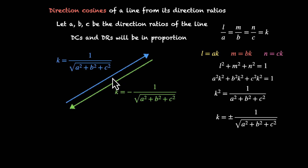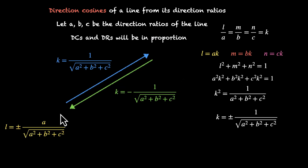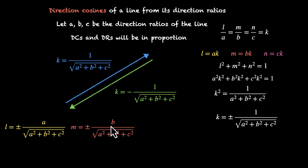If we're heading one way, we get one set of L, M and N — one set of cosines. If we're heading the opposite way, we get the negatives of them. Plugging in the values, L = ±A/√(A² + B² + C²), M = ±B/√(A² + B² + C²), and N = ±C/√(A² + B² + C²).